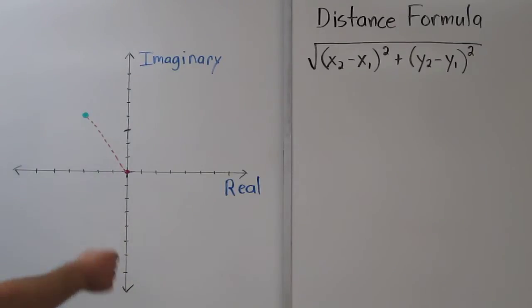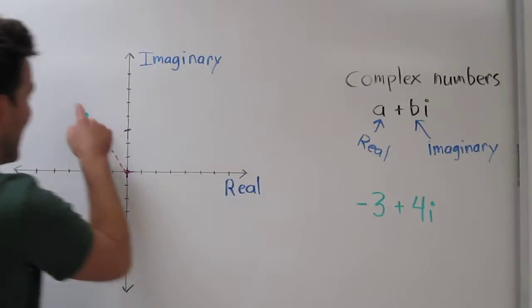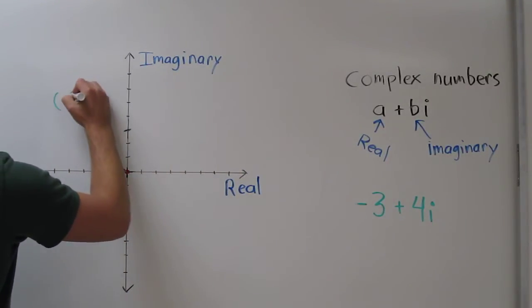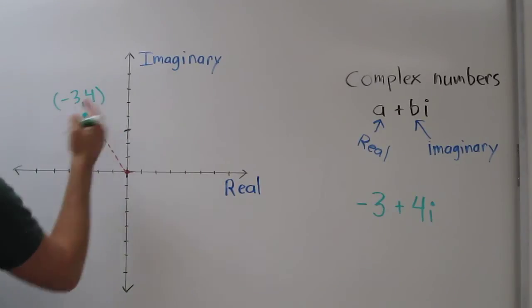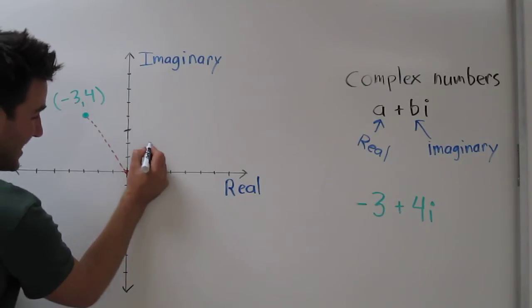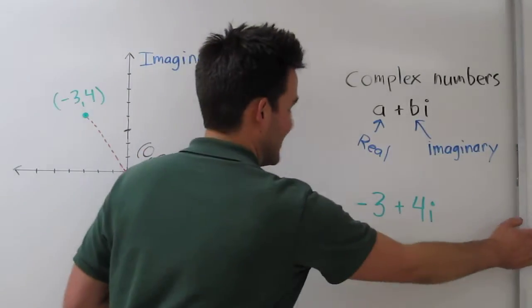Let's do that for right here. I'll write this right above this point so we know the coordinates. The coordinates are negative 3, 4, and the coordinates at the origin are always 0, 0. Back to the distance formula.